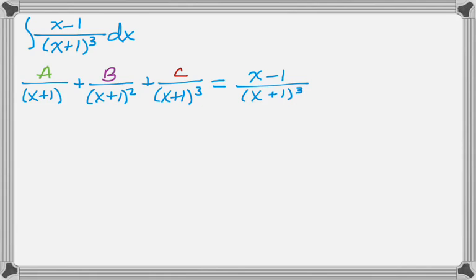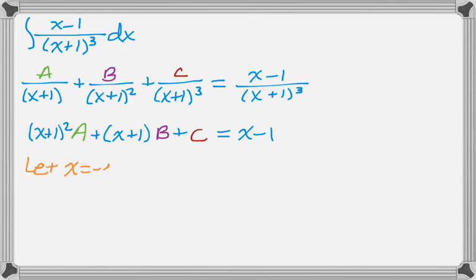I go about this in pretty much the standard way. So I'm going to multiply through by the common denominator. And you can see that the powers kind of cancel out. And I get to this point. Here if I let x equal negative 1, I should be able to solve for c. So letting x equals negative 1 gives me c equals negative 2.